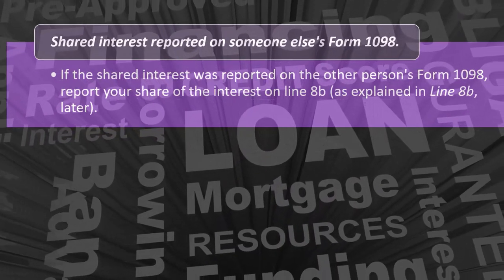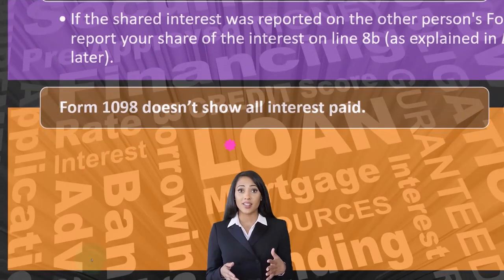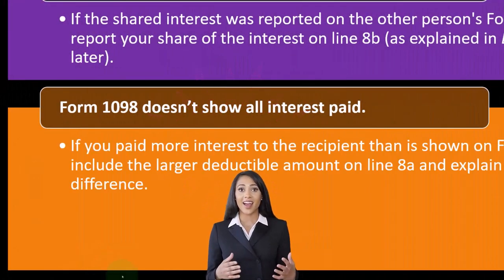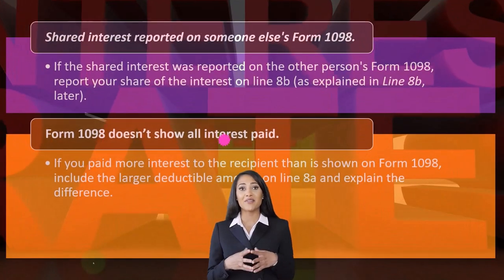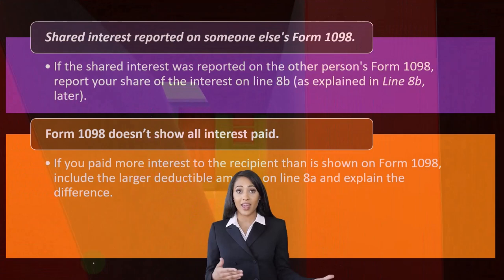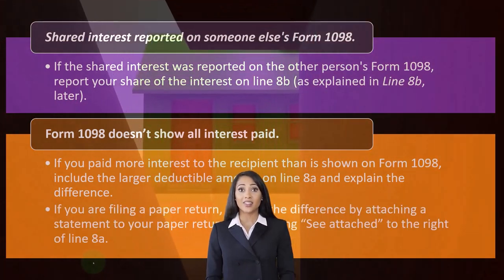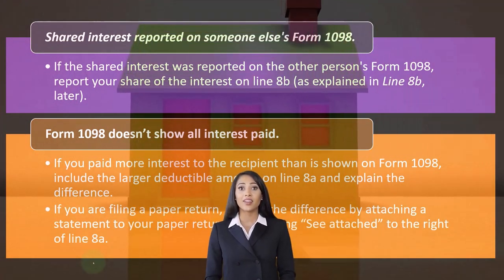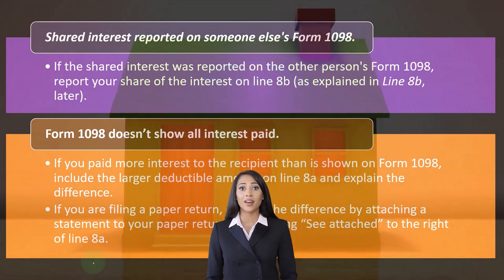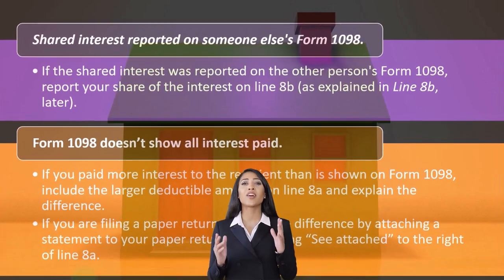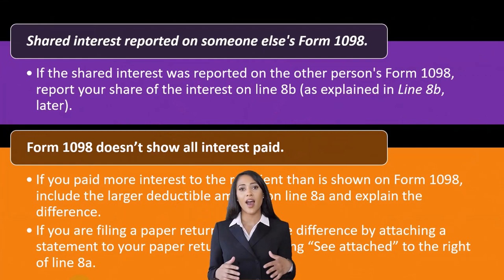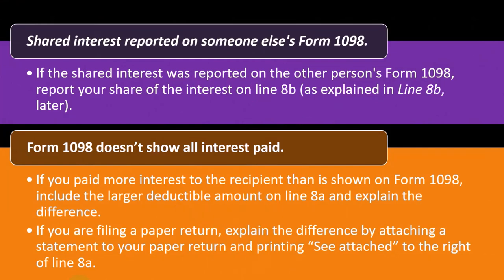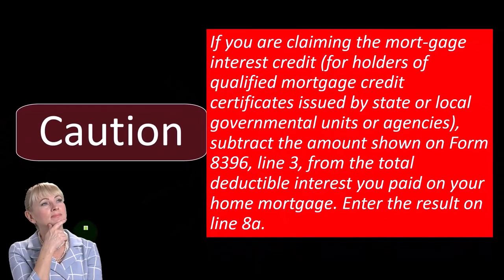If the shared interest was reported on someone else's Form 1098, report your share of the interest on Line 8B. If Form 1098 doesn't show all interest paid — meaning you paid more interest to the recipient than is shown — include the larger deductible amount on Line 8A and explain the difference, because the IRS will notice you've reported more than what's on the 1098. If you're filing a paper return, you can explain the difference by attaching a statement and printing 'See attached' to the right of Line 8A.